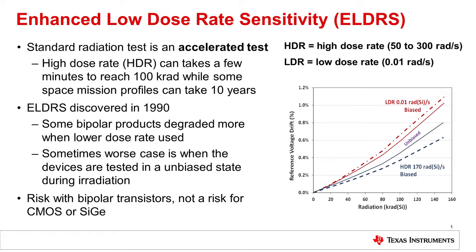In the plot on the right, I'm showing the drift of a reference versus radiation. The blue lines are when the parts are irradiated at high dose, and the red lines are when the part is irradiated at low dose. It can be seen that for this product, it's worst at a low dose rate, and thus the part has ELDRS.